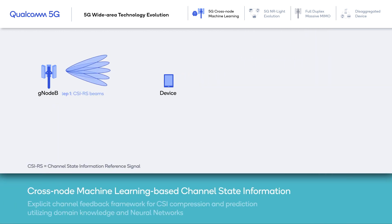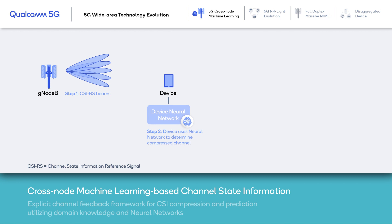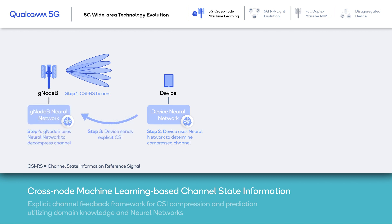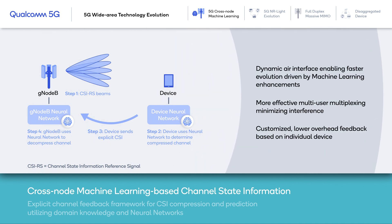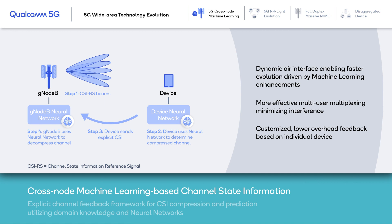In the second case with machine learning, the device sends explicit CSI feedback to the gNB. This explicit channel feedback framework allows for customized low-overhead feedback based on individual device channel conditions and delivers more efficient multi-user multiplexing.